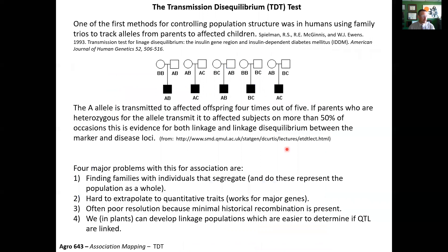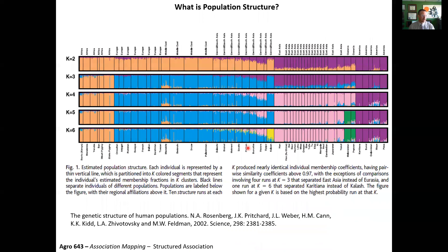These authors developed the Q plus K model. I'll show how population structure can be visually depicted and measured. The most common and original way to measure population structure is using a program called STRUCTURE, developed by Jonathan Pritchard and collaborators about 20 years ago. It's one of the most highly cited tools in the field of genetics. It uses different model-based priors and different numbers of populations to get different results.